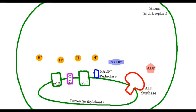We'll get started with the light dependent reactions. You can see in our diagram here that we've got the chloroplast, which is an organelle inside of the plant cell specifically. We've got a thylakoid, which is a small structure inside of the chloroplast. There are lots of thylakoids that stack up inside of chloroplasts, but they all look the same and serve the same function — the more thylakoids, the more photosynthesis can take place.